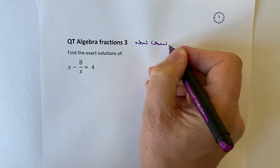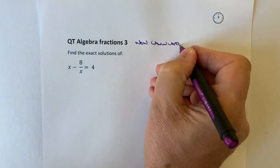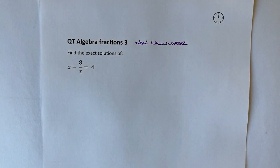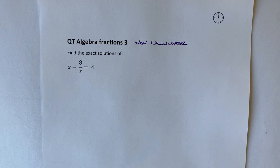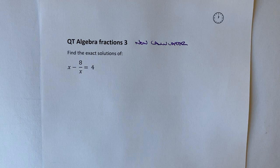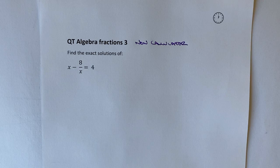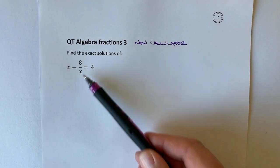So it might be slightly more difficult to actually work through. But because we're being asked to find the exact solutions, I'm assuming the solutions are going to be in surd form. If you're not sure what I'm talking about, please do have a look at some of the other videos within this particular playlist. So my big problem here is going to be this denominator of x.